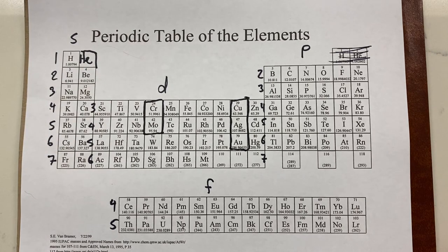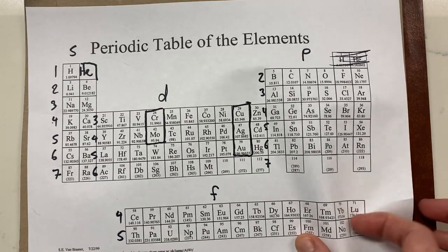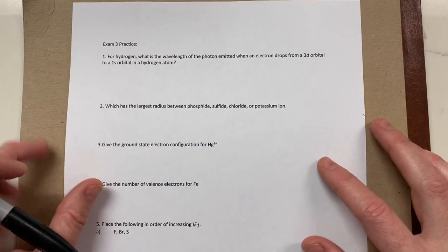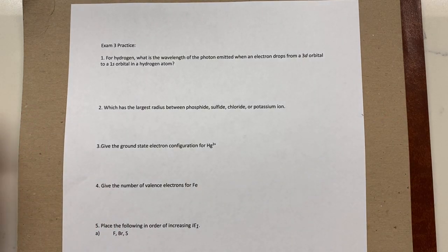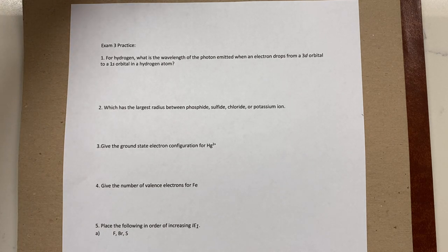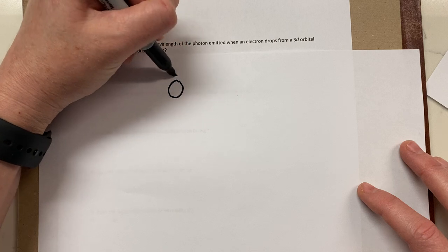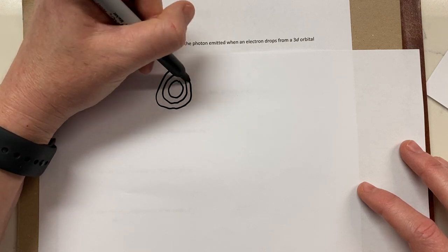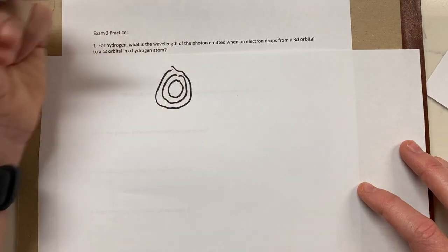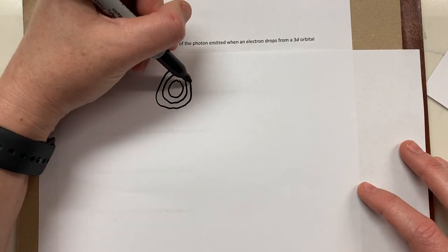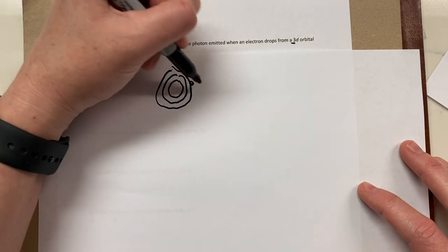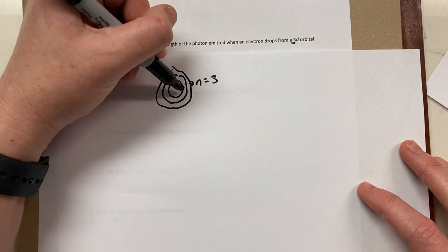Once we have that, we're ready to start the exam. The first question asks: for hydrogen, what is the wavelength of a photon emitted as it drops from a 3d orbital to a 1s orbital? So we have an atom dropping from n equals 3 down to n equals 1.